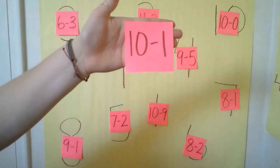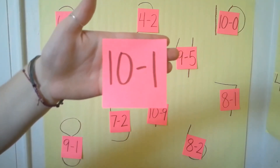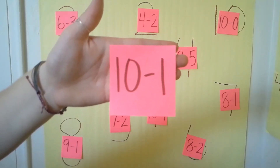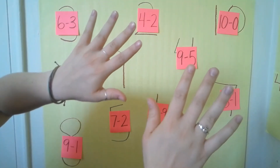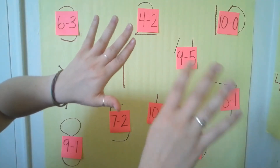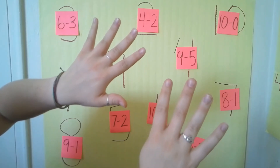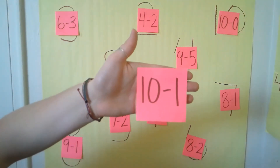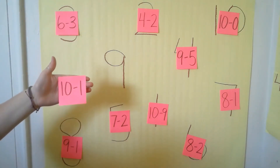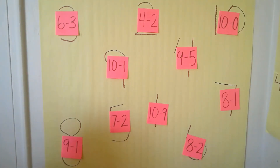Our last number sentence is — what is it? Ten minus one. What's ten minus one? Let's check your work. First we need to hold up ten fingers. Now we're going to take away how many? One. So take away one finger. How many fingers do we have left? Nine. We have nine fingers left, so our answer is ten minus one equals nine. Is nine our last number on the board? It sure is.